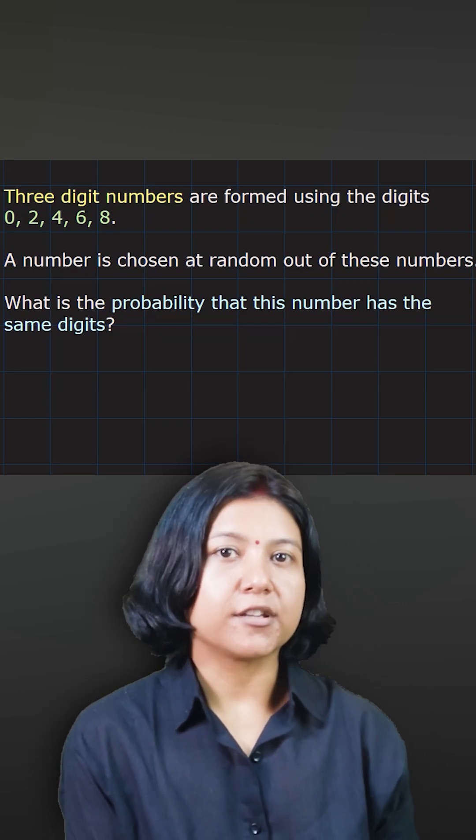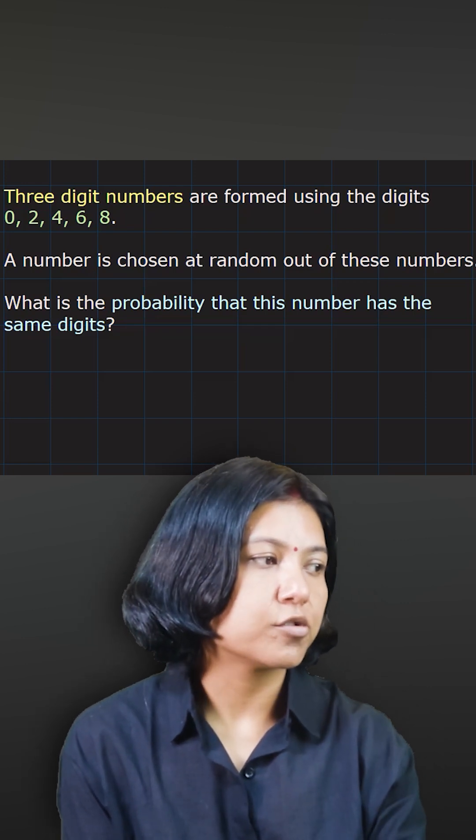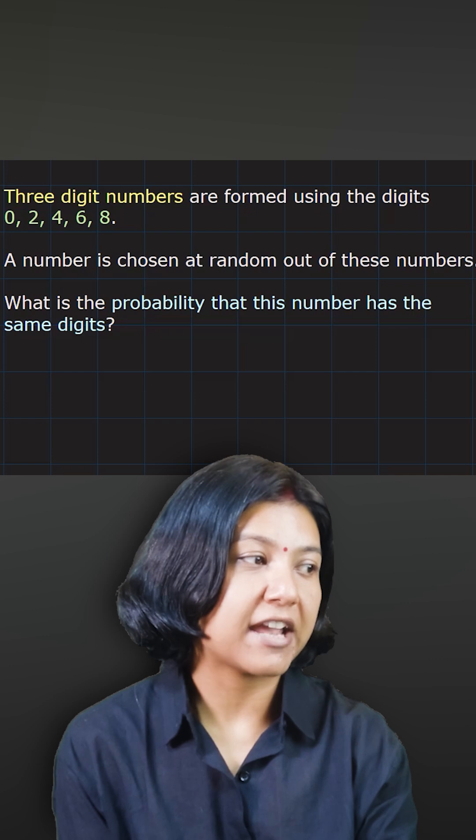You want to form a three-digit number using the digits 0, 2, 4, 6, and 8. So you have five digits in total.